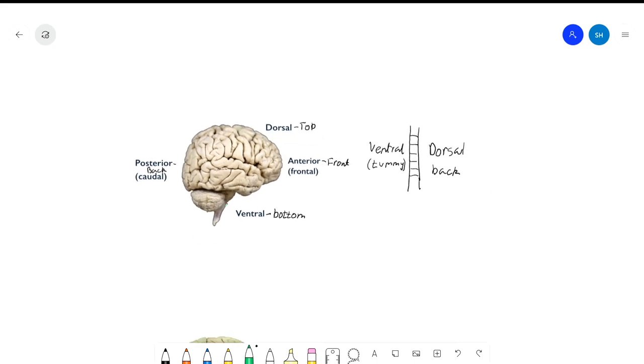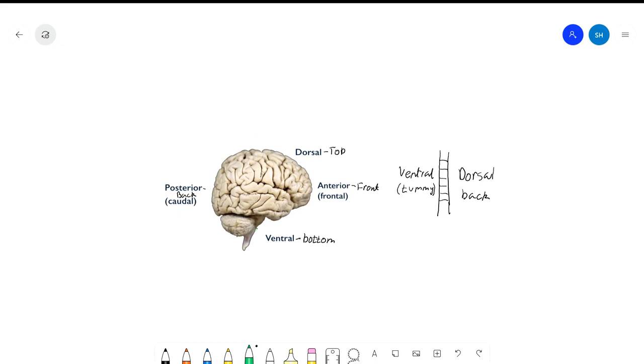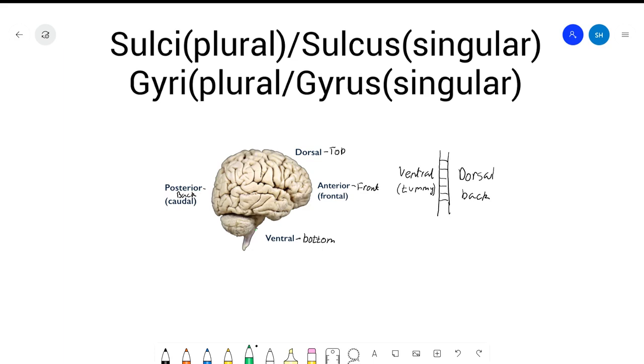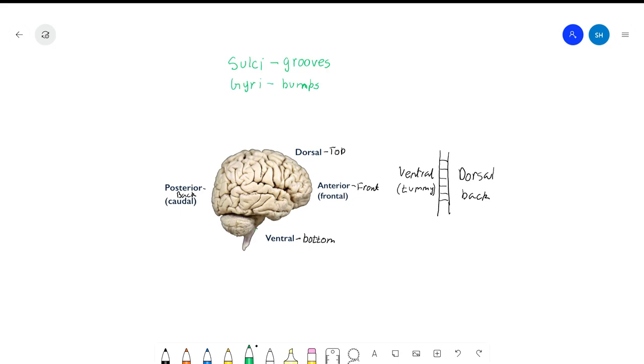Now that the directions are clear, the brain also has gyri and sulci. A gyrus is the bumps and the sulci is the grooves. So for example, this is a sulcus and this is a gyrus. Those are just two more terms that you might come across a lot.